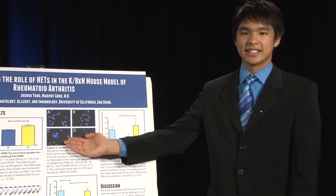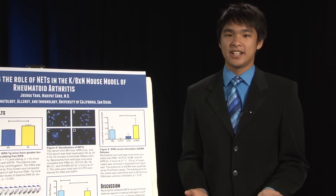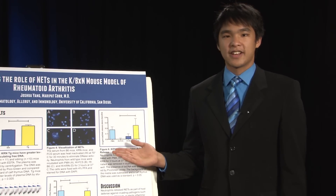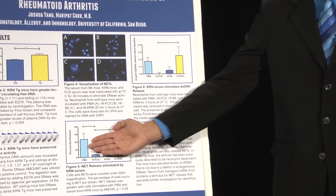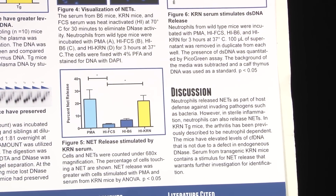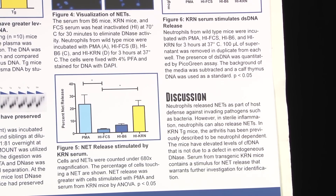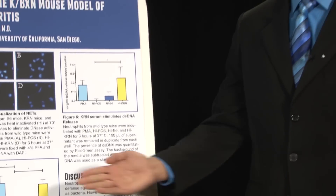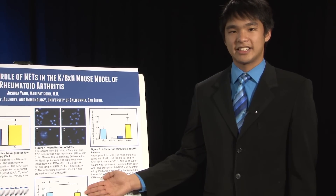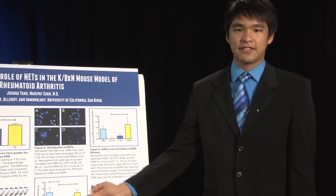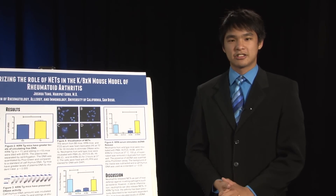We see that in panel C there is some NET release, and in panel D there is higher levels of NET release. In order to quantify this, we determined the percent of NET release in these neutrophils with the various stimuli. As we can see in figure 5, the chemical stimulus had very high levels of NET release. The unstimulated resting neutrophils show low levels of NET release. We find that the heat-inactivated KBXN serum caused very high levels of NET release that was statistically significant over the unstimulated neutrophils, while the heat-inactivated wild-type serum does not cause statistically significant NET release over the unstimulated neutrophils.